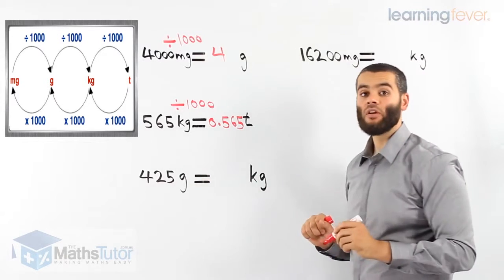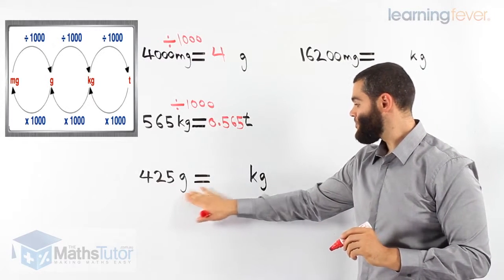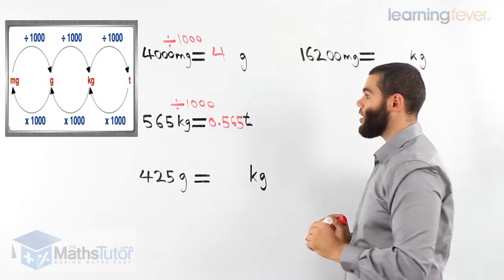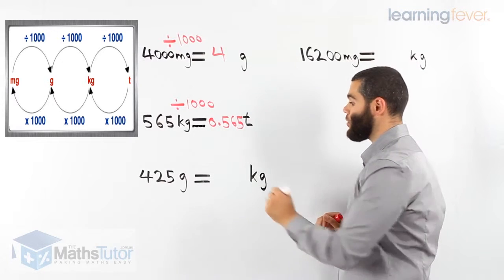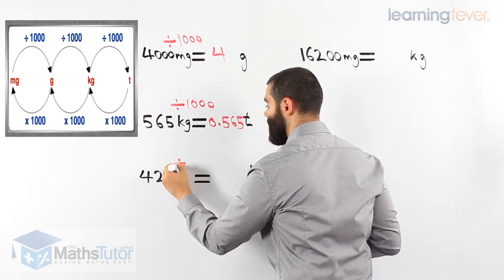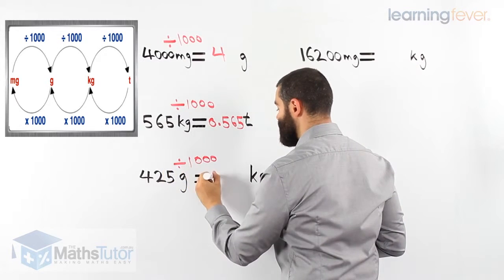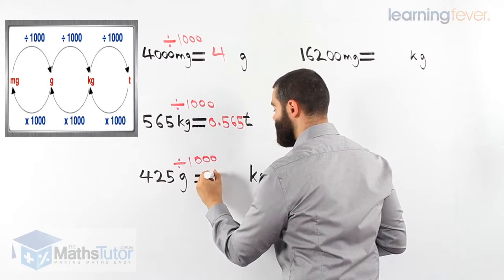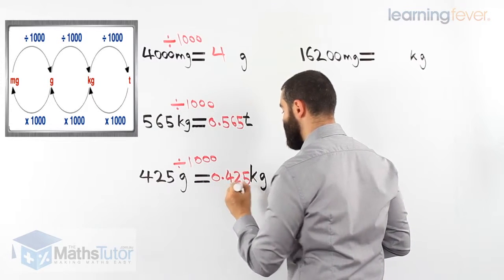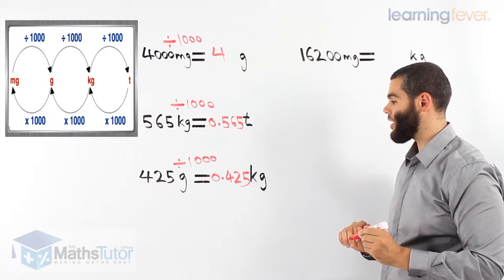Four hundred and twenty-five grams — we want to go from grams to kilograms. Again, we are going to a larger unit, so we are dividing by a thousand, which becomes zero point four two five kilograms.